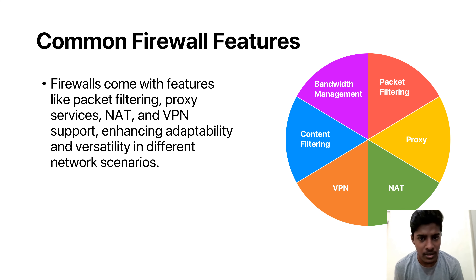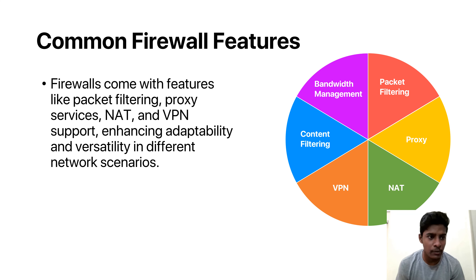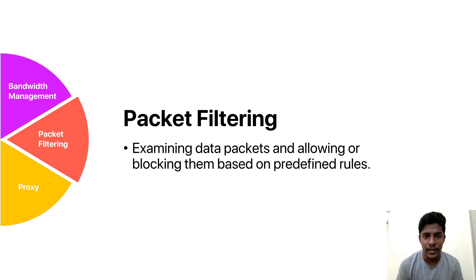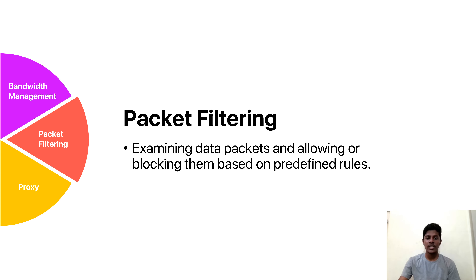Firewalls offer a wide range of features that address diverse security needs, including packet filtering, proxy services, network address translation, and VPN. Packet filtering is like a gatekeeper for your digital highway — your network. Your data travels in little packets and the packet filter is a vigilant inspector checking each one. It looks at details like where the data is coming from, where it's headed, and what type of data it's carrying. Then, based on rules you have established, it decides whether to accept or reject it. It's a bit like sorting mail — letting the important stuff in and keeping the junk out. Packet filtering is a fundamental firewall feature that adds a layer of control to your network traffic, ensuring only the right data gets to its destination.